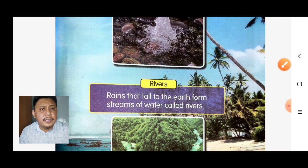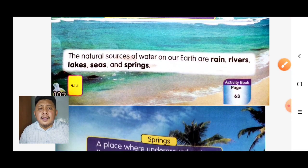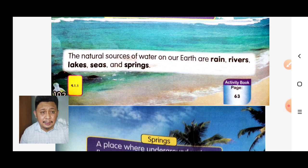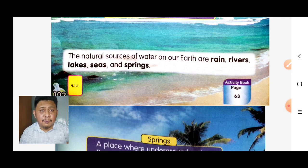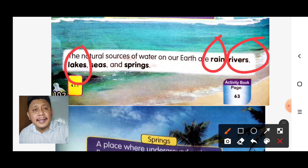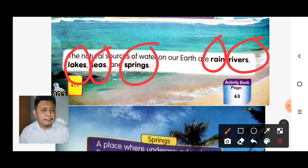In conclusion, the natural sources of water on our earth are rain, rivers, lakes, seas, and springs.